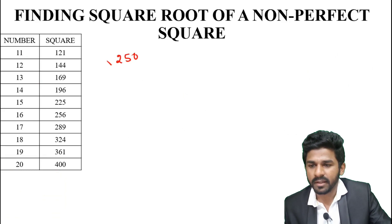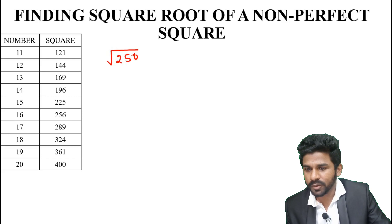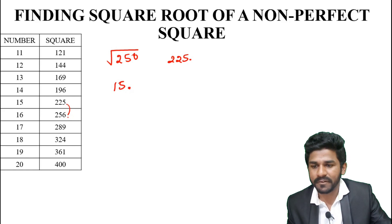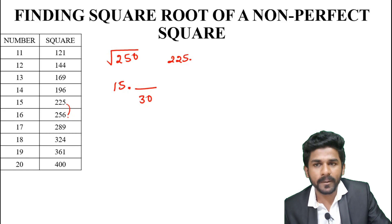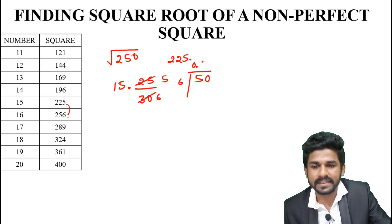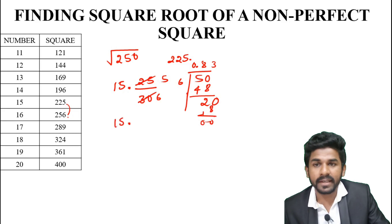Next: root of 250. 250 is between the perfect squares 225 and 256. The nearest lower perfect square is 225, and √225 = 15. So the answer is 15 point something. Double 15 is 30. Then 250 minus 225 = 25. So 25 divided by 30 ≈ 0.83. Therefore, √250 ≈ 15.83.